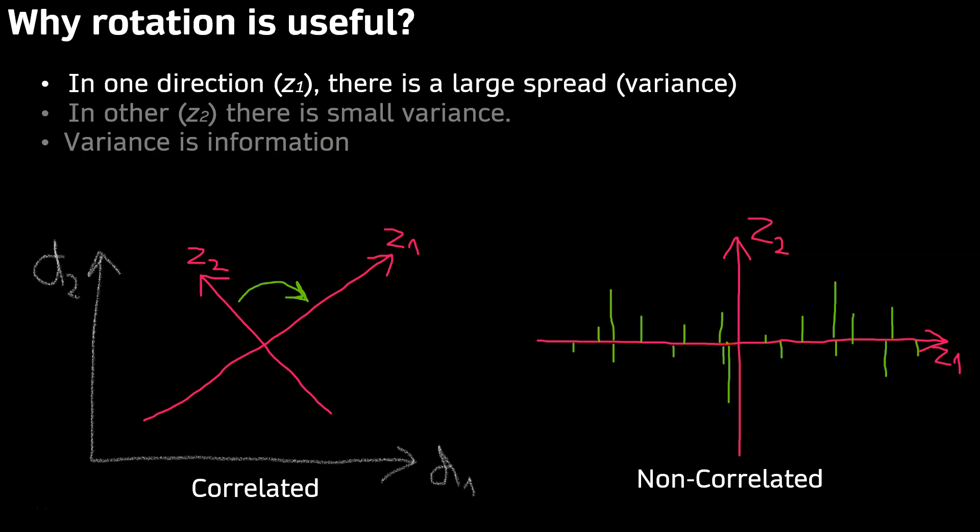In one direction, Z1, there is a large spread. In other words, it is variance. In our dimension, Z2, there is small variance.